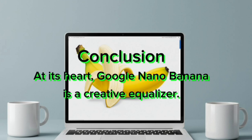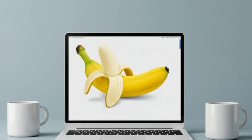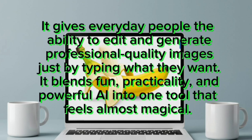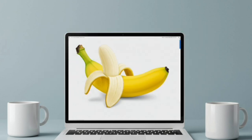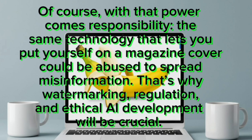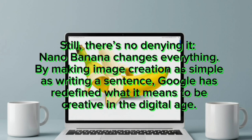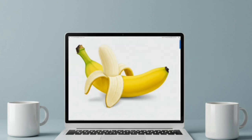Conclusion: at its heart, Google Nano-Banana is a creative equalizer. It gives everyday people the ability to edit and generate professional-quality images just by typing what they want. It blends fun, practicality, and powerful AI into one tool that feels almost magical. Of course, with that power comes responsibility — the same technology that lets you put yourself on a magazine cover could be abused to spread misinformation. That's why watermarking, regulation, and ethical AI development will be crucial. Still, there's no denying it: Nano-Banana changes everything. By making image creation as simple as writing a sentence, Google has redefined what it means to be creative in the digital age. Thanks for watching.